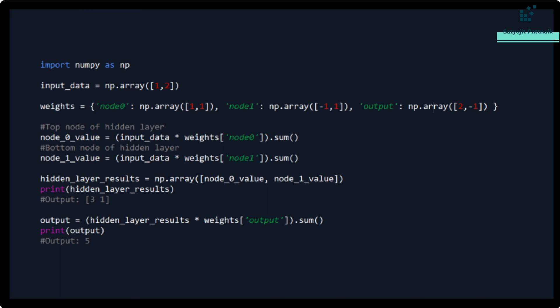We have two nodes of a hidden layer. We have an input which is 1 and 2. We have defined the weights at each node. Value at node 0 is basically input data into node 0 weights. Similarly, value at node 1 is basically input data multiplied with node 1 weights.